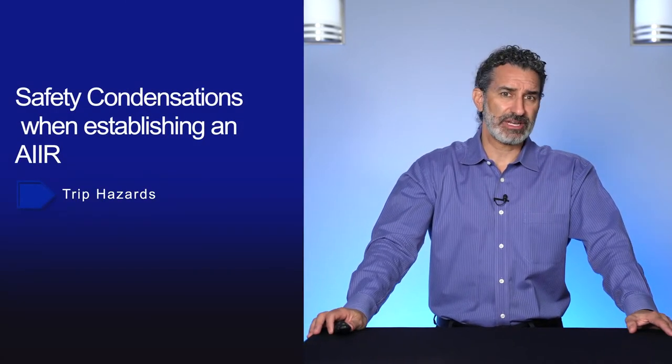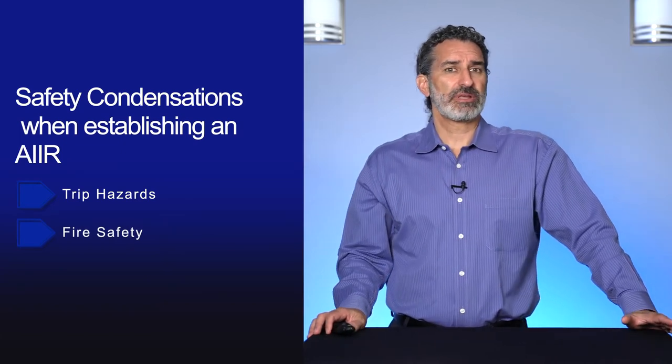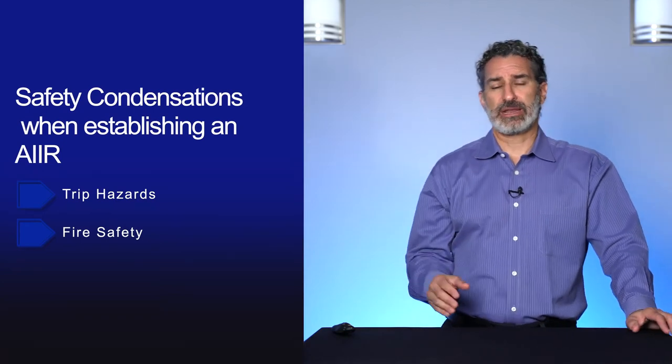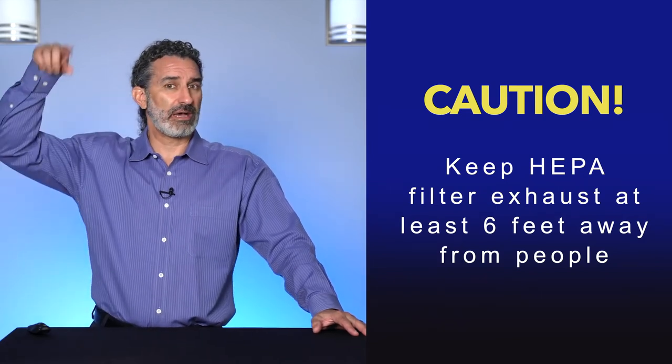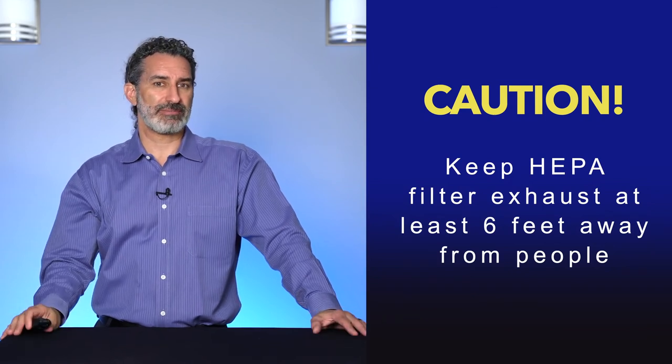There are many safety considerations when establishing an AIIR, including trip hazards and fire safety. HEPA-filtered exhaust, although it should have negligible infectious particles, should not outlet near people — in case of HEPA system failure. Keep HEPA-filtered exhaust at least six feet away from any people, and generally run ducting outside the building up to the roof so exhaust is released into the atmosphere and not near passersby, roads, sidewalks, paths of travel, or outdoor air inlets for your HVAC system.